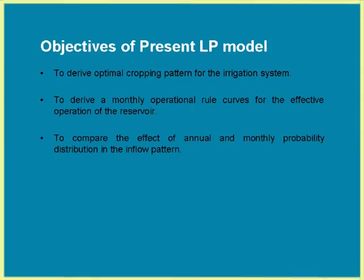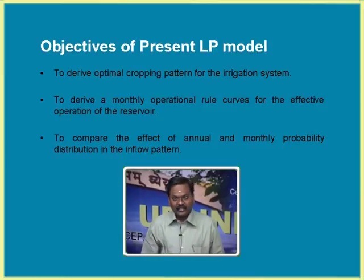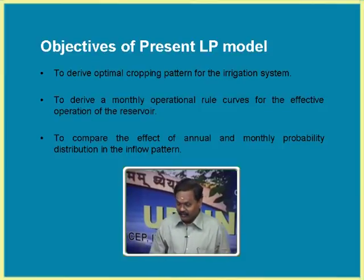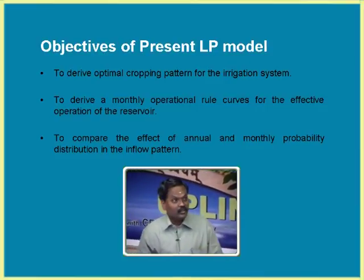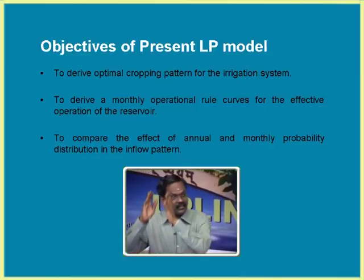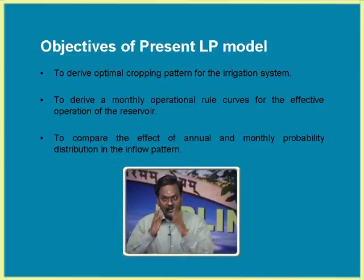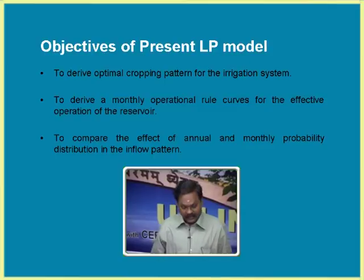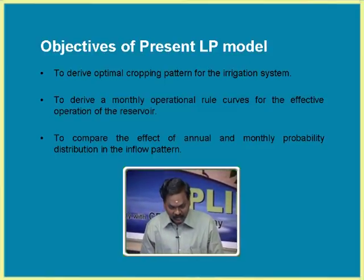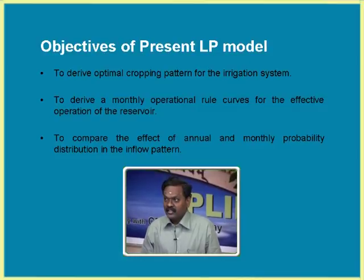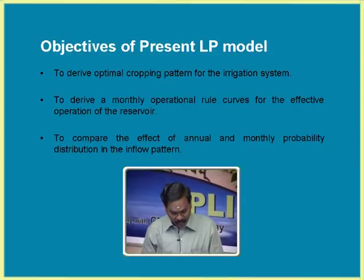Once we know which year this probability of occurrence occurs, we consider that year as the deterministic LP model inflow. But there is another way also — instead of considering annual data to determine probability of occurrence, you can consider monthly data as probability of occurrence, but that is not fair enough. Many researchers have not distinguished between these two. So here we consider both and applied the chance constrained linear programming model considering annual inflow and also monthly inflow as the chance constrained probability.